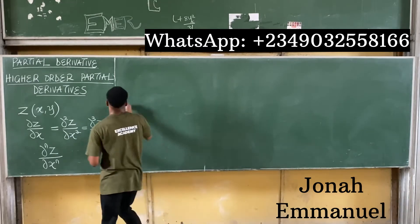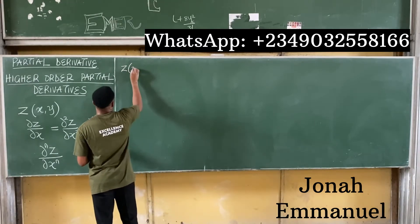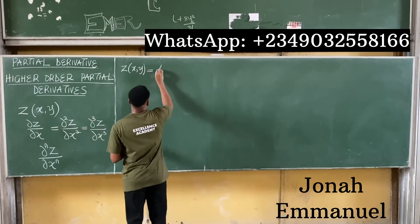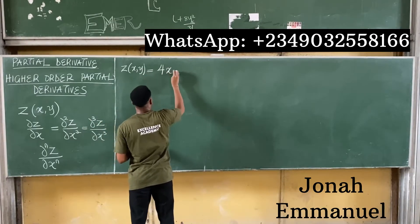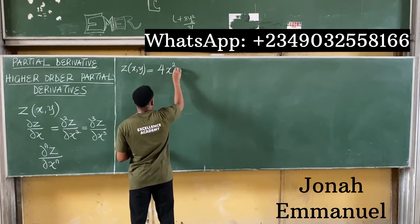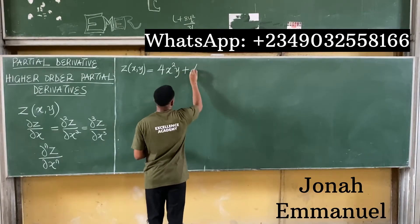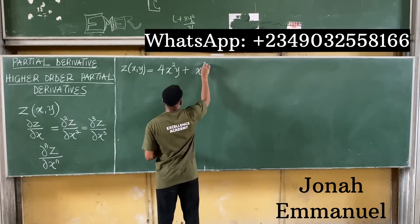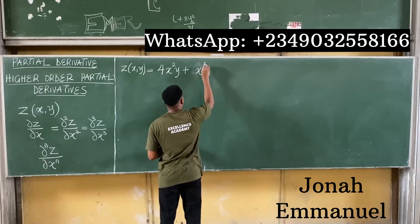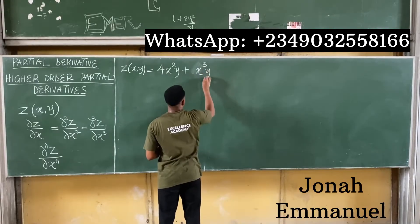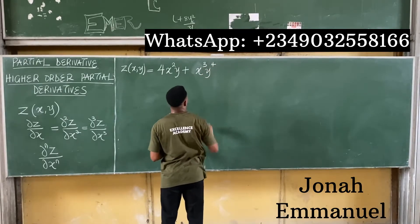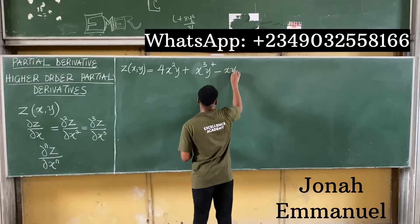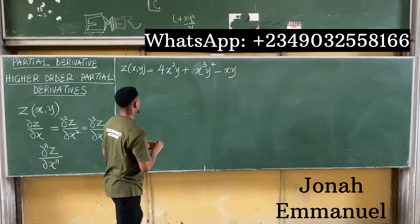Let's take an example. Let's say z(x,y) is equal to 4x squared y plus y cubed plus x cubed y to the power 4 minus xy.